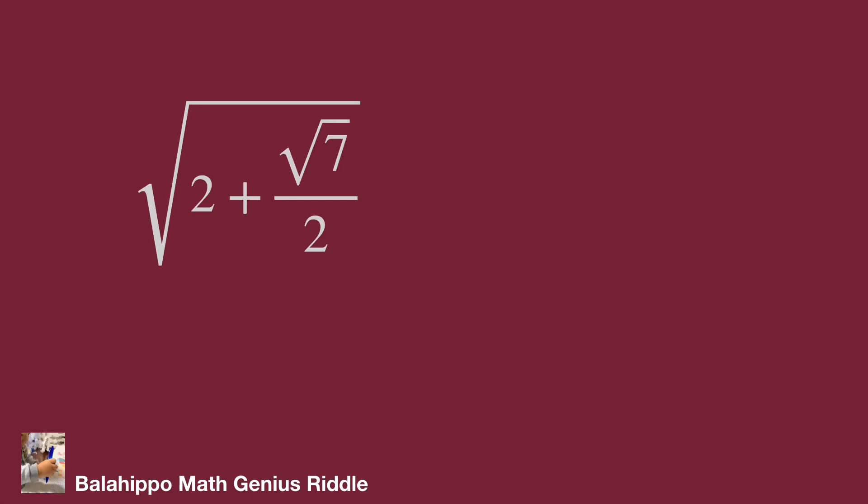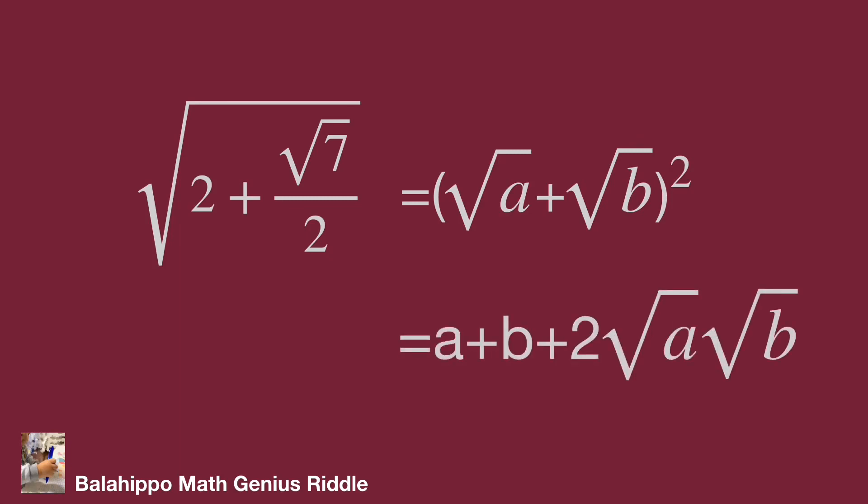The given information: square root of 2 plus square root of 7 over 2. Simplify the square root to get a new value. We assume that it is equal to a square, such as quantity square root of a plus square root of b, squared. Then develop this square as a plus b plus 2 times square root of a times square root of b.